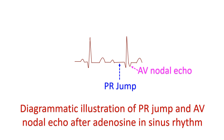AV nodal echo is defined as a retrograde P wave at the end of the QRS complex, as seen in the case of atrial ectopic in the previous ECG. An echo beat can also be followed by AVNRT, similar to what occurred after an atrial ectopic beat in the previous case. Thus, adenosine is useful in demonstrating the presence of dual AV nodal physiology from the surface ECG, which would indicate that the clinical tachycardia is AVNRT rather than AVRT. A positive adenosine test identified by a PR jump had a specificity of 94% and a positive predictive value of 96% in one study.